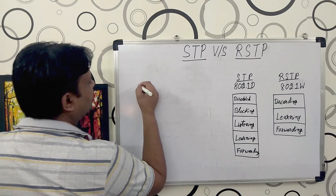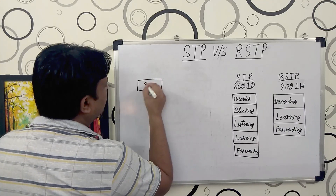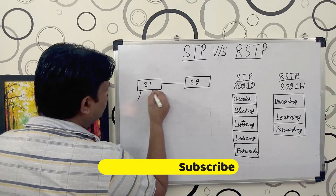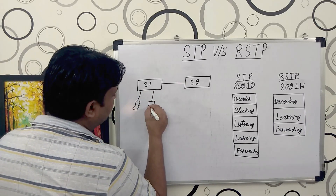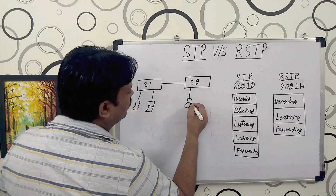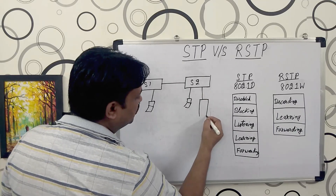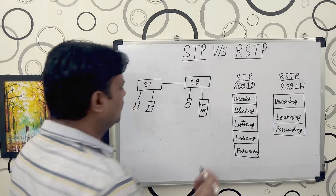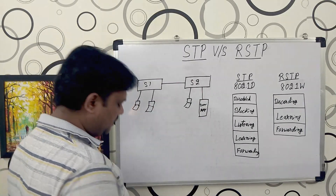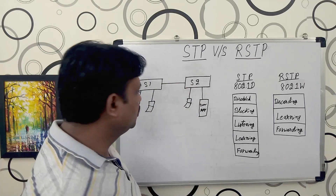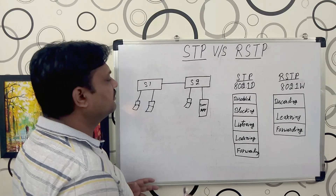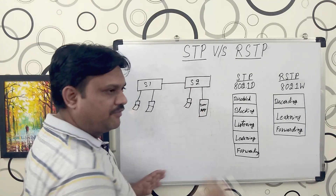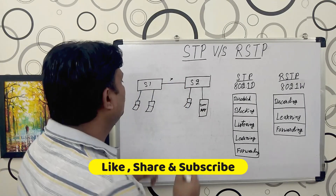Let me design one network here. Say for example I have Switch Number One connected to Switch Number Two. With Switch Number One I have two users connected. With Switch Number Two I have one normal user and one application server connected, which is used by every user connected to both switches. Now as a network engineer, if we have created this topology, it will work perfectly fine until there is no problem.